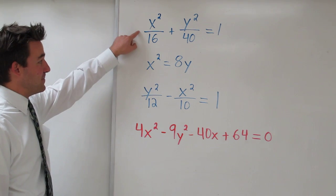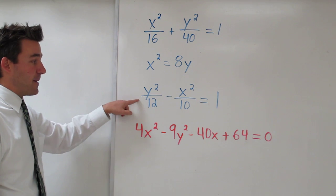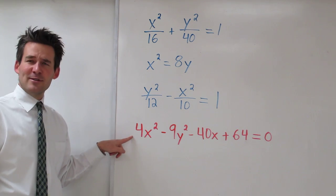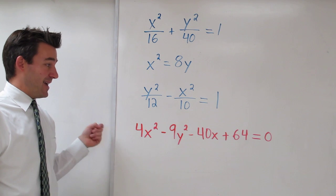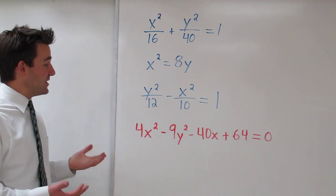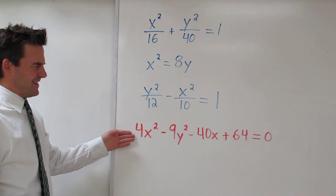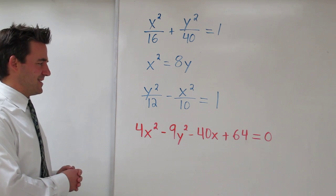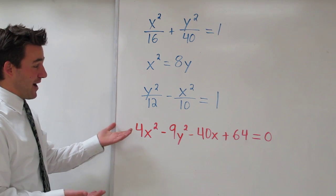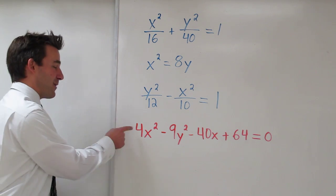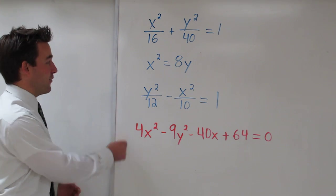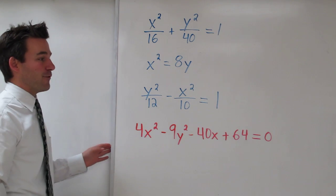So this is an ellipse, a parabola, and a hyperbola. Now even though this red one represents a conic section, it's what we call a general equation of degree 2. And it's difficult to determine which conic section it is and also how to graph it. So our goal today is to rewrite things in this general second degree form into standard form.